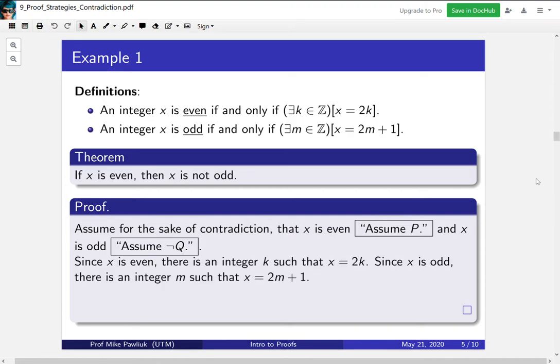So we unwrap some definitions. If x is even, there's an integer k such that x = 2k. And if x is odd, there's an integer m such that x = 2m + 1. Now we've written x in two different ways. Let's use this to find a contradiction.